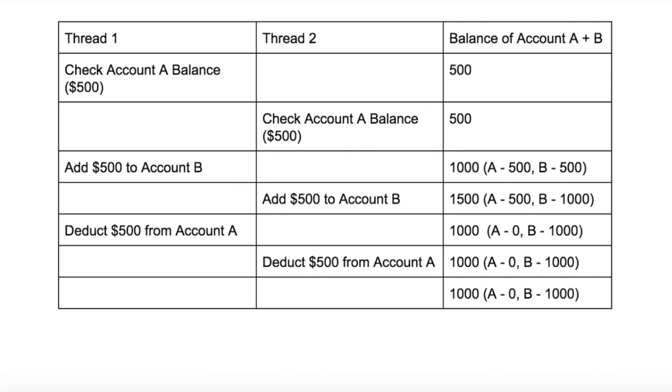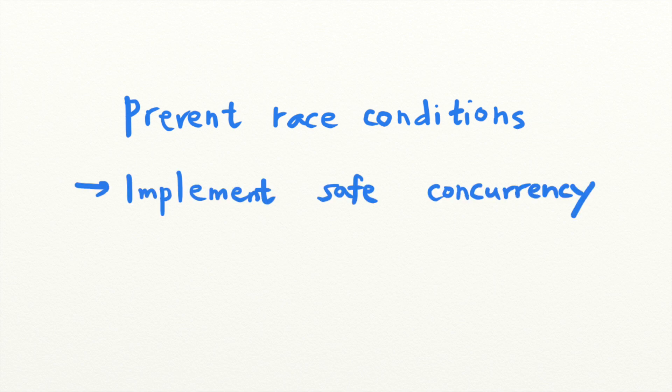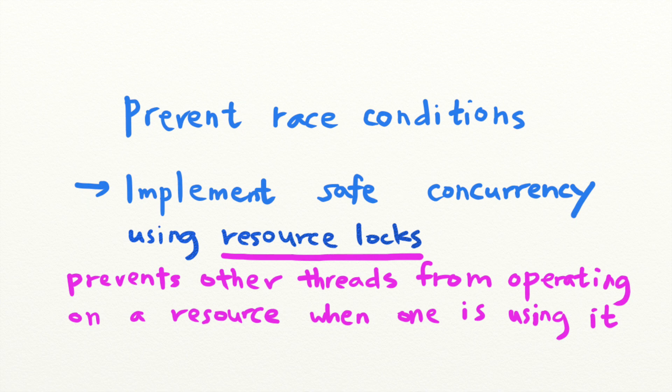So how do you prevent these dangerous vulnerabilities? The key to preventing race conditions is to implement safe concurrency. And the best way to do this is by using resource locks so that threads do not operate on the same resources simultaneously. Most programming languages that have concurrency abilities will also have some sort of locking functionality built in. Refer to the documentation of your chosen language and learn how to do it.